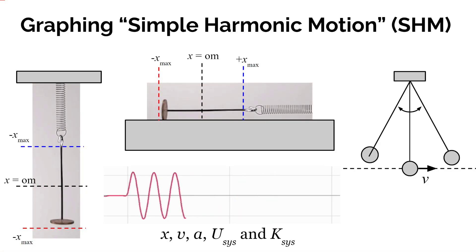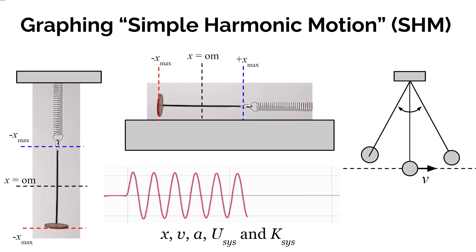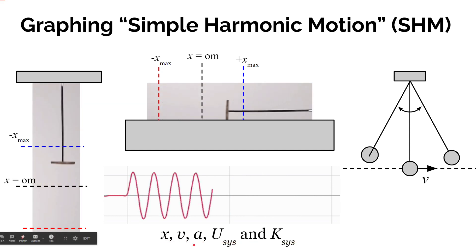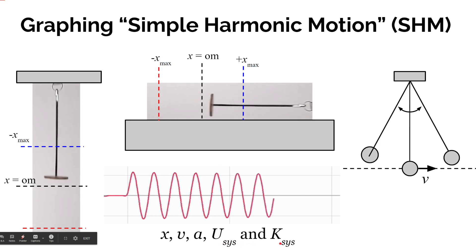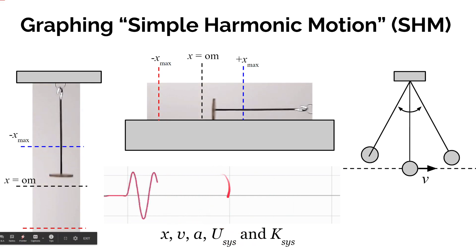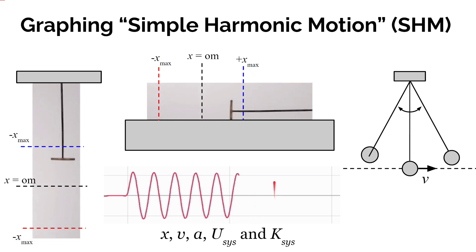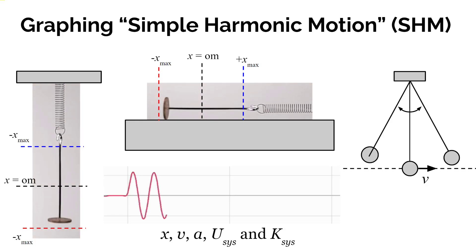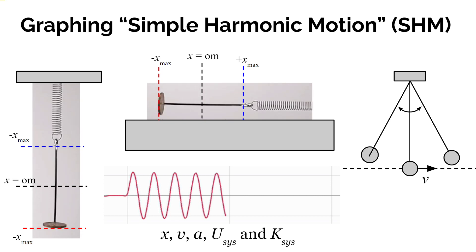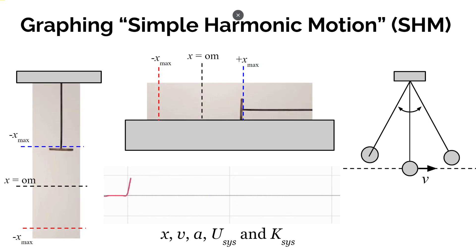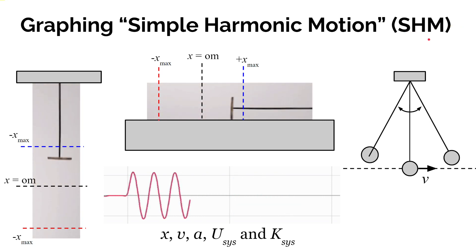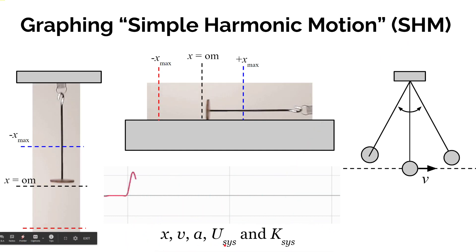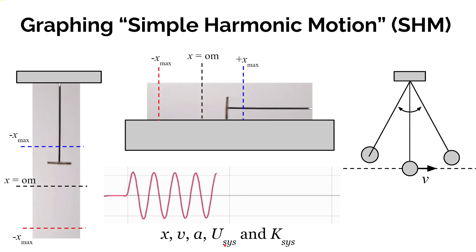Everything we've discussed in this video is for a vertical oscillating spring mass system — how position, velocity, acceleration, potential energy, and kinetic energy all vary like a sine or cosine curve. But this is actually true for horizontal spring mass systems and for pendulum systems as well. The periodic motion of all three of these systems can be described as simple harmonic motion, or SHM. So now you should be able to think about how all of these quantities change over time for any one of these three systems.